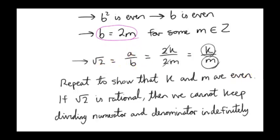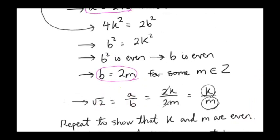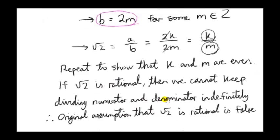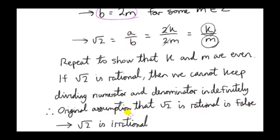If root 2 is a rational number, we just keep repeating the process and we keep showing that the numerator and denominator are even. Since that makes no sense for a rational number, it means that our original assumption that root 2 is a rational number is false. That means that root 2 is a new type of number — if it's not a rational number, we say it's an irrational number.